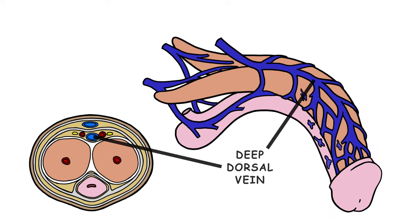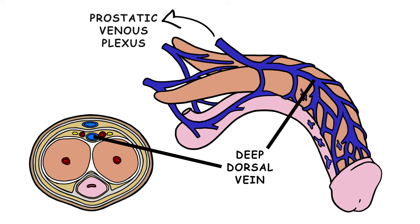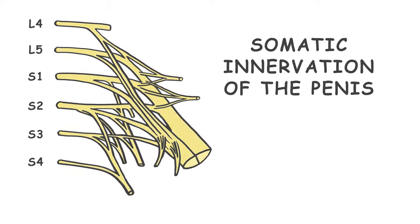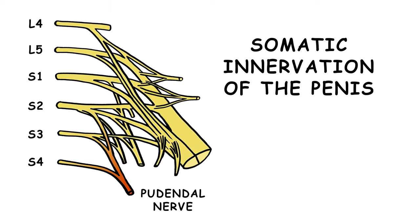A deep dorsal vein drains the cavernous spaces into the prostatic venous plexus. The superficial dorsal veins drain the skin and cutaneous tissues. Somatic innervation of the penis is via the pudendal nerve, which arises from the S2 to S4 sacral spinal segments.